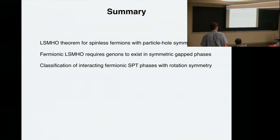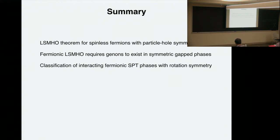Question: what is the effect of long-range interactions on the Lieb-Schultz-Mattis theorem? The proof will likely not apply if you have long-range interactions, because Hastings' proof essentially uses the Lieb-Robinson bound. That becomes questionable with long-range interactions, although there have been recent generalizations of the Lieb-Robinson bound with long-range interactions that may be applied to see what happens.